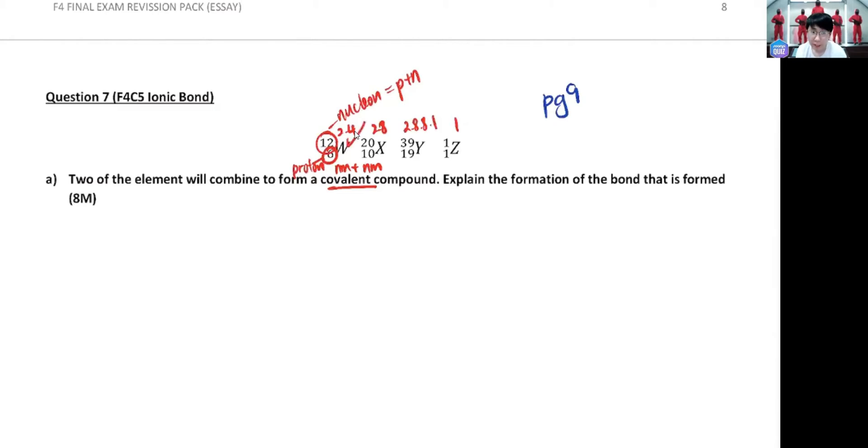Is 2.8 going to form any bond? 2.8 is stable already. He's not going to form any bond, so therefore this is out. 2.8.8.1 - group one, guys. Group one is metal. Out, because I want non-metal and non-metal, which is only left in the last guy here, Z, which is only one valence electron. So some students will get confused.